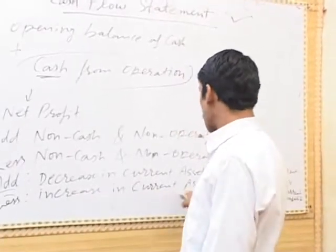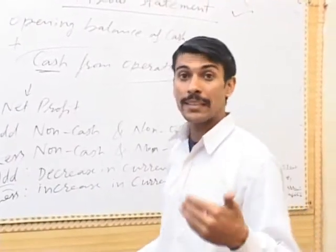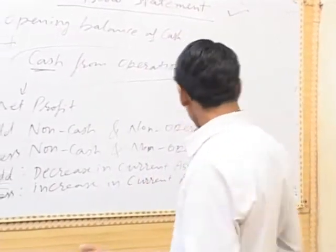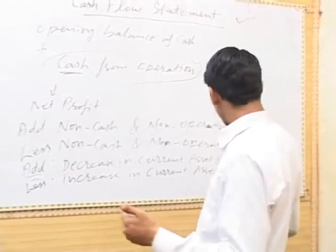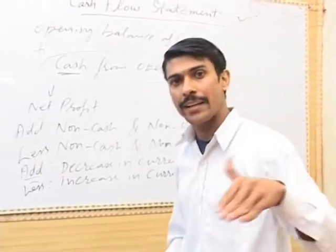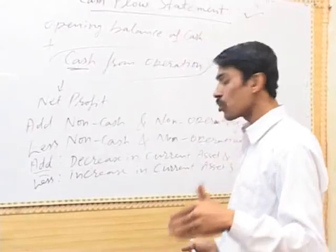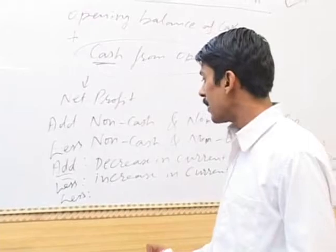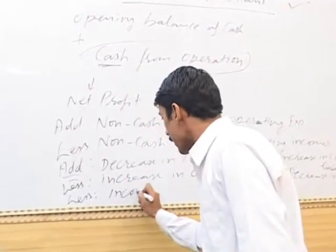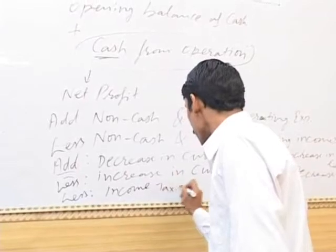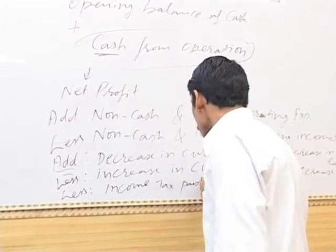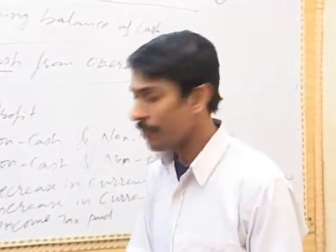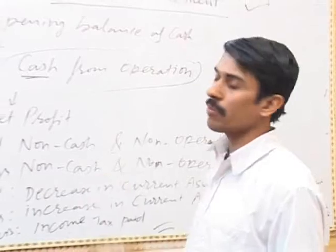Increase in current assets means increase in stock, increase in debtors, and increase in short-term assets. Decrease in current liabilities means decrease in bills payable, creditors, and short-term loans. Finally, we subtract income tax paid, because this is a cash expense and an operating expense.